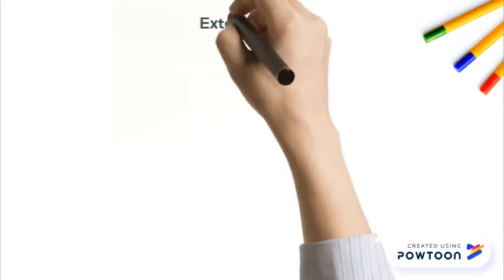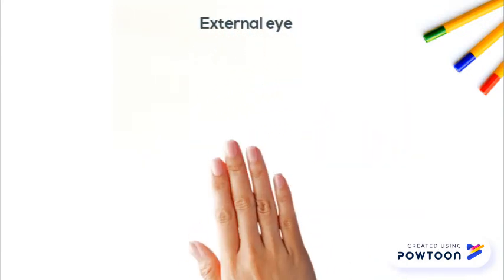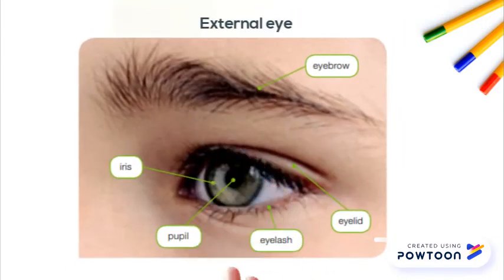Here is a picture of an external eye where you can see the eyebrow, iris, pupil, eyelash, and eyelid.